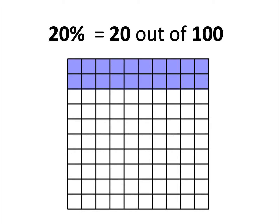This is the same as saying 20 squares out of 100 squares are shaded in. What would 34% look like? 34% is the same as saying 34 out of 100. 34 squares is shaded in out of 100 squares.